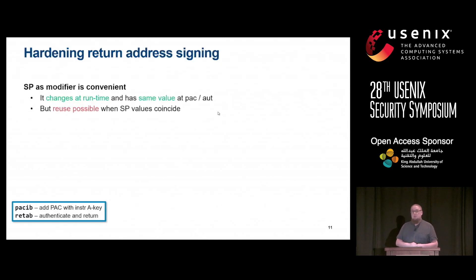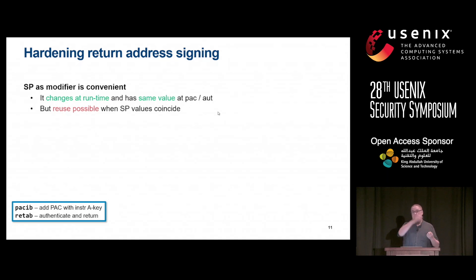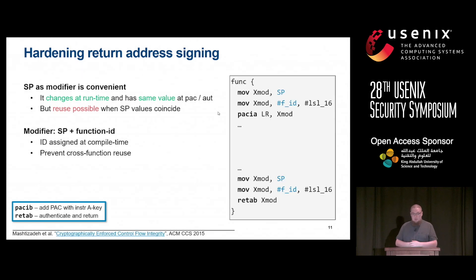For return address protection, we use the stack pointer that GCC also uses, which is convenient because it changes at runtime, giving some granularity to the protection. We also always know the stack pointer has the same value at the beginning and end of a function, so there's no extra bookkeeping needed. But reuse attacks are still possible with only the stack pointer, so we combine it with a function ID — a unique value per function — which prevents cross-function reuse attacks.